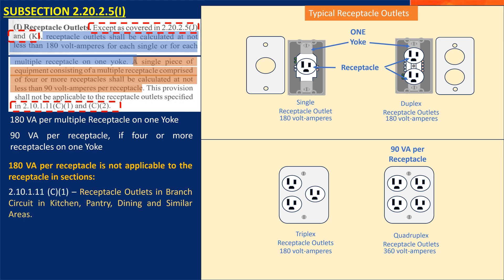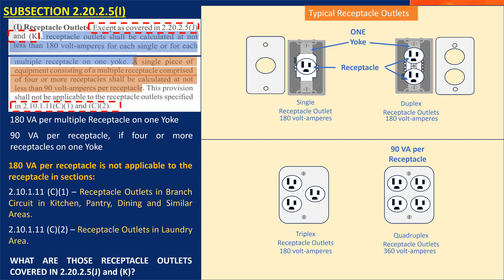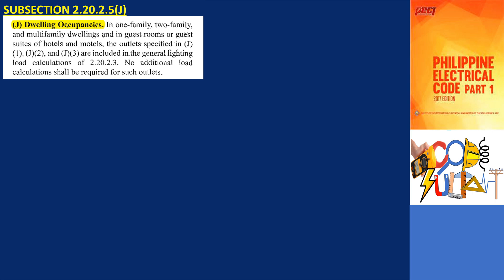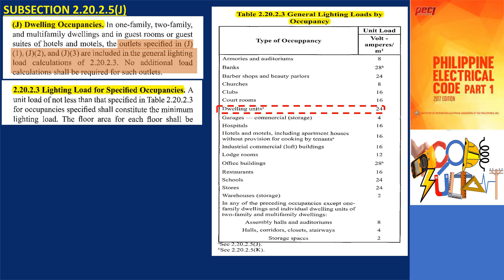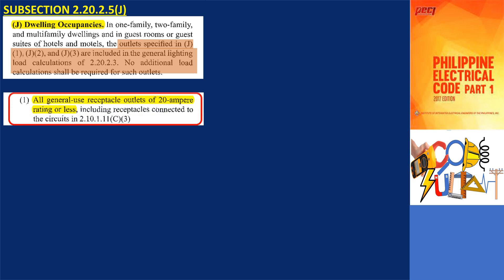Subsection 2.10.1.11c1 covers receptacle outlets in dwelling units' kitchen, pantry, dining, and similar areas, and subsection 2.10.1.11c2 is for receptacle outlets in dwelling units' laundry area. Subsection 2.20.2.5j covers receptacle outlets specified in J1, J2, and J3 of dwelling units, guest rooms, or guest suites of hotels and motels. These outlets are already included in the general lighting load calculation in section 2.20.2.3, so load calculations for these outlets are not required. Outlets in J1 are for all general use receptacle outlets of 20A rating or less, including receptacles connected to the circuits in 2.10.1.11c3.